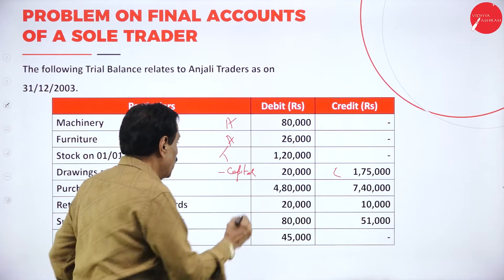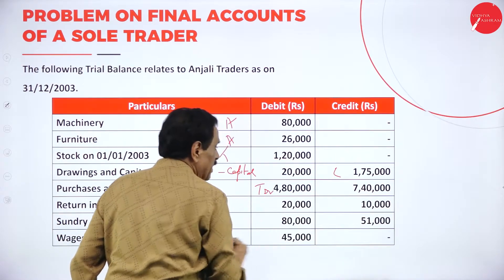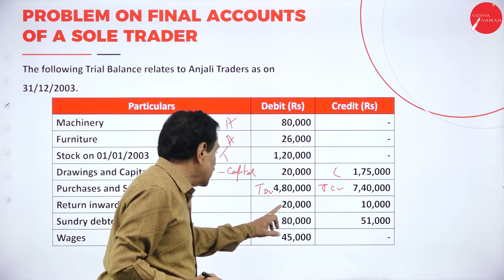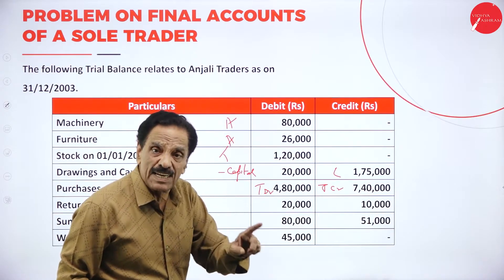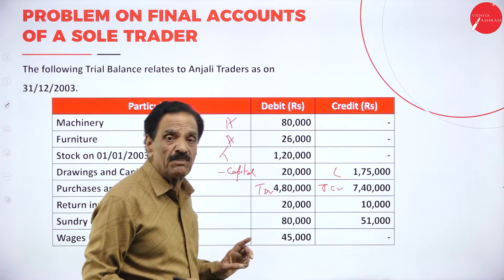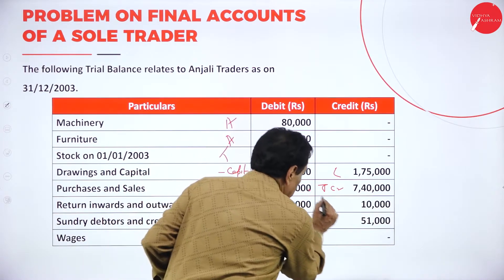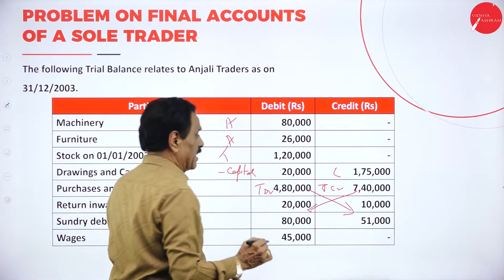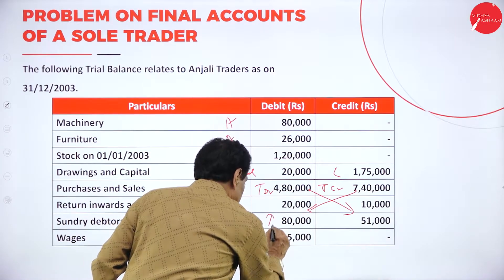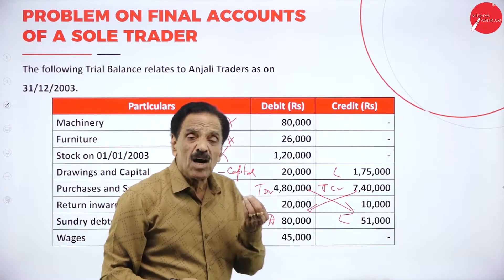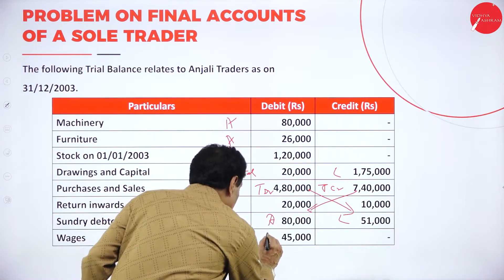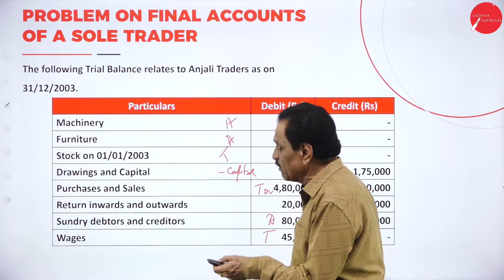Sales return is on the debit side; purchase return is on the credit side. Debtor is an asset; creditor is a liability — how much money is payable? 51,000. Wages come under trading account, directly connected. Salary for 11 months — 22,000 paid, 1 month outstanding. Rent paid for 13 months — 7,800 for 13 months, so 600 per month; one month is prepaid. Salary comes under profit and loss account. Rent comes under profit and loss account. Insurance comes under profit and loss account, debit side. Advertisement — profit and loss account.